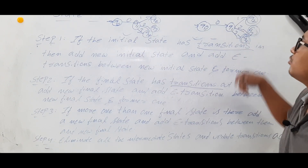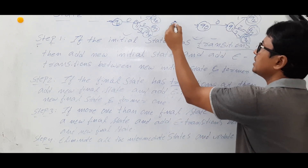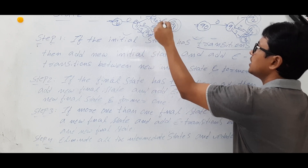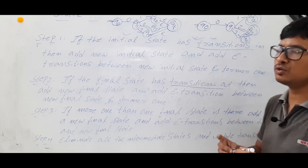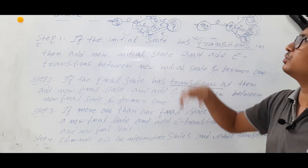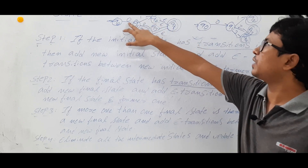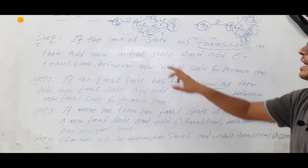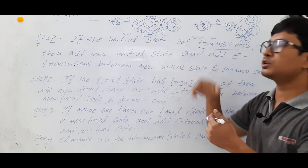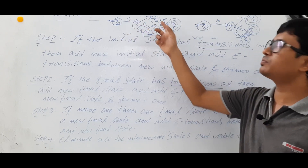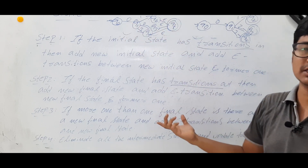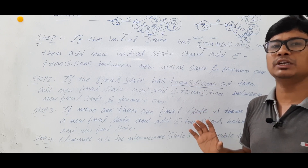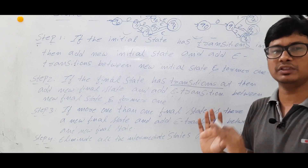If you have more than one final state, what you do is take one new dummy final state and add epsilon transitions from each former final state to the new one. There is no change in the languages accepted by this finite automata. Previously it accepted strings 01, 02, 03; now with epsilon transitions it still accepts 01, 02, 03. So after doing the changes from steps one, two, and three, the language accepted by the finite automata will not change.